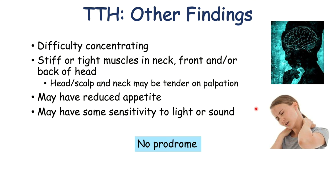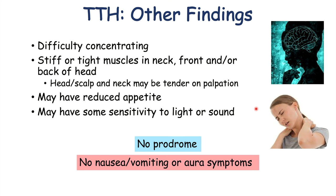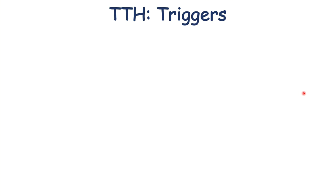It's important to note that tension type headaches differ from migraine headaches in that they do not have a prodrome, and they do not have nausea, vomiting, or aura symptoms. If you want more information on prodrome and aura symptoms, please check out the full lesson on migraine headaches. Now let's talk about the triggers of these headaches.